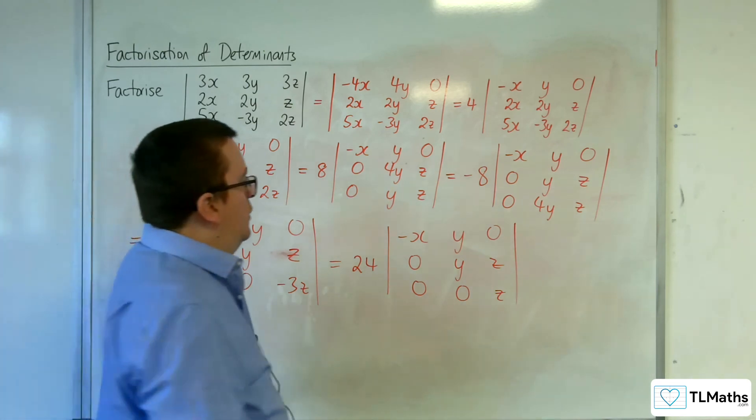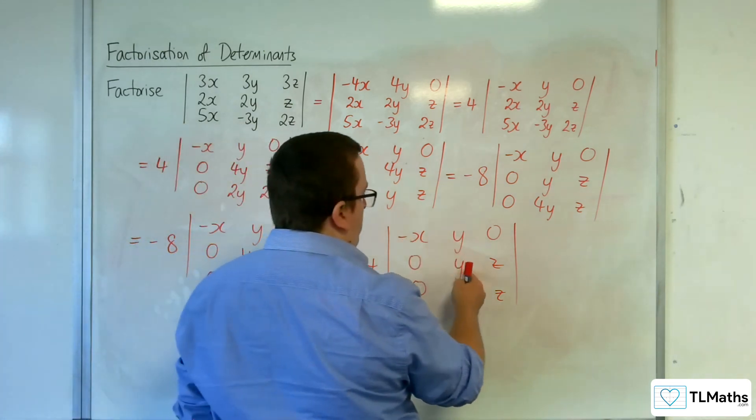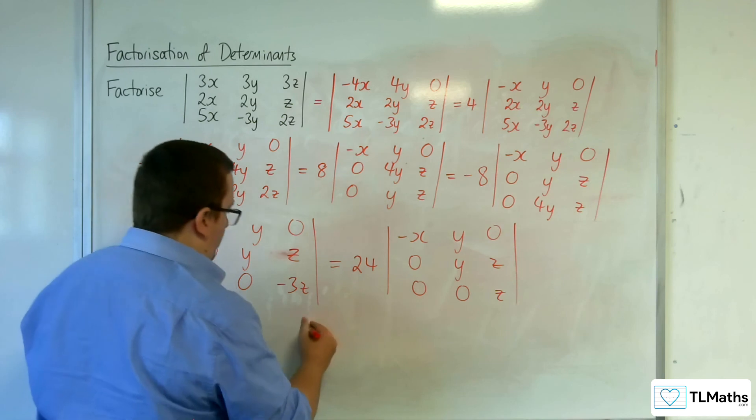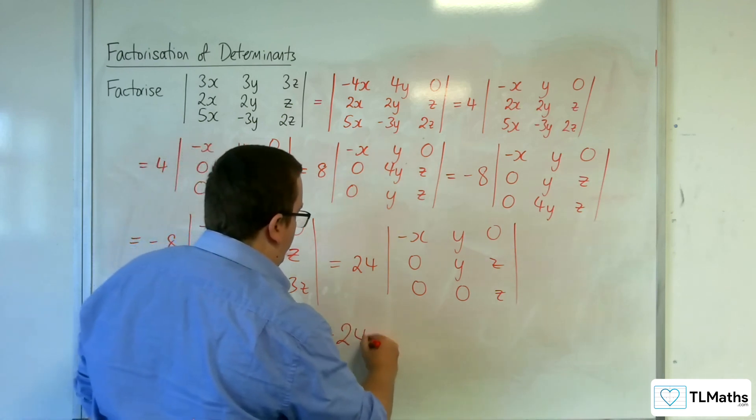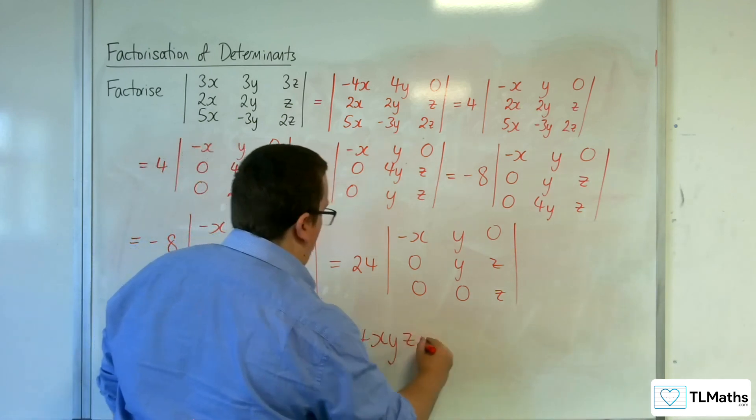And then I've got minus x times y times z times 24. So minus 24xyz.